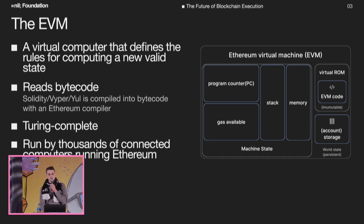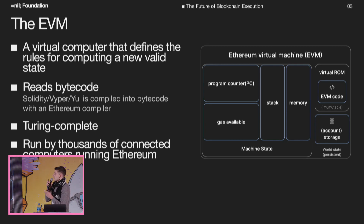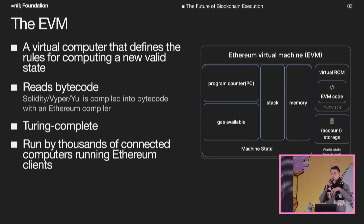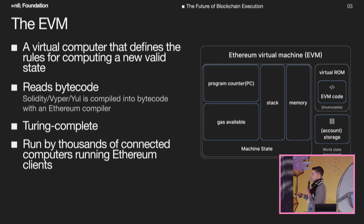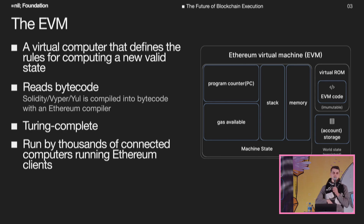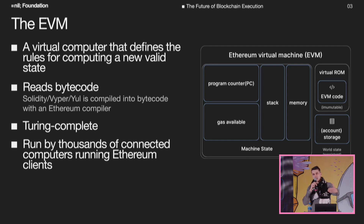The EVM is essentially the rules of the correct state transition of Ethereum, the Ethereum blockchain. It reads the Ethereum bytecode — so Solidity, Yul, and Vyper code gets compiled down through an Ethereum compiler into bytecode which the EVM can read. It's a stack-based machine. It's fully Turing complete, meaning that it can compute and process arbitrary computations, and this is very important for smart contract logic. And uniquely, unlike traditional virtual machines, it's run by thousands of nodes that process this state transition function in lockstep.